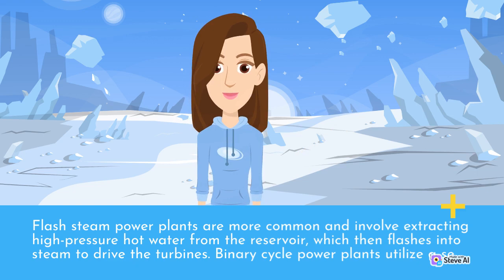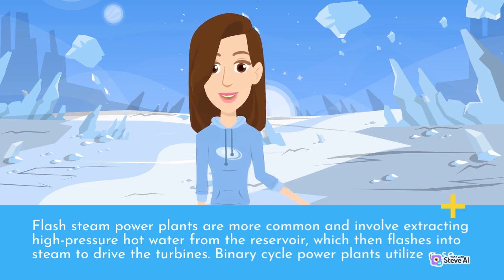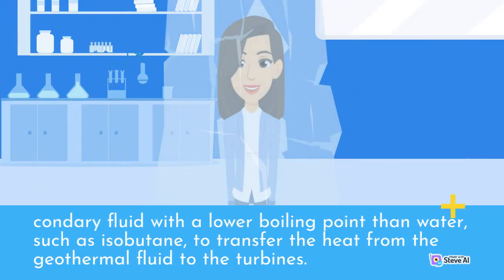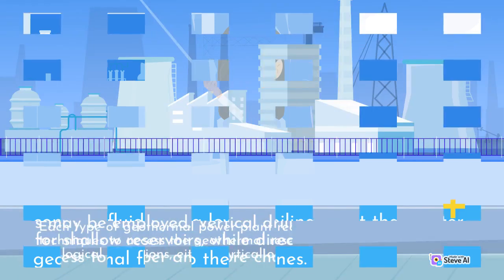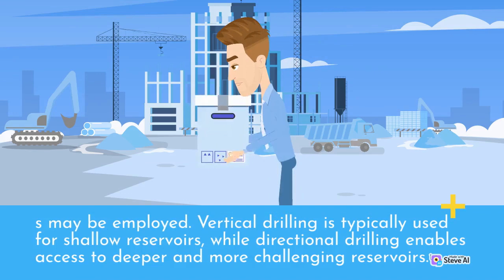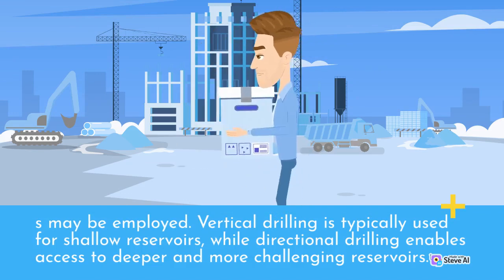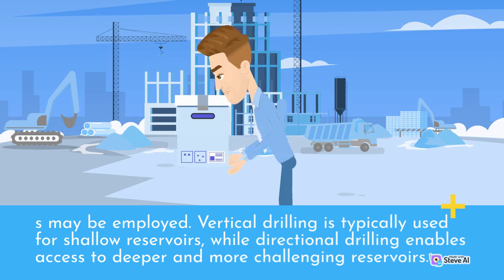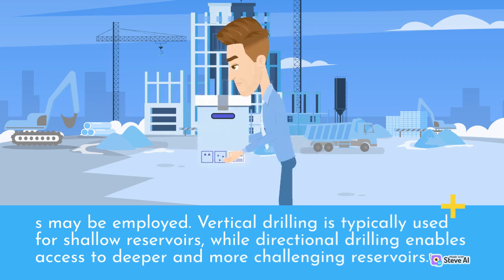Binary cycle power plants utilize a secondary fluid with a lower boiling point than water, such as isobutane, to transfer the heat from the geothermal fluid to the turbines. Each type of geothermal power plant requires specific drilling techniques to access the geothermal reservoir. Depending on the geological conditions, either vertical or directional drilling techniques may be employed. Vertical drilling is typically used for shallow reservoirs, while directional drilling enables access to deeper and more challenging reservoirs.